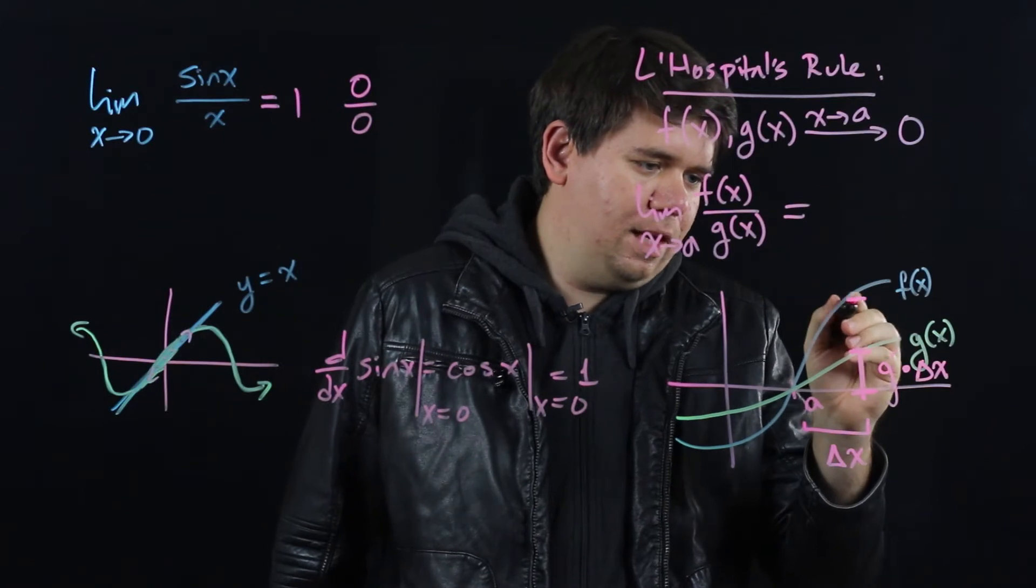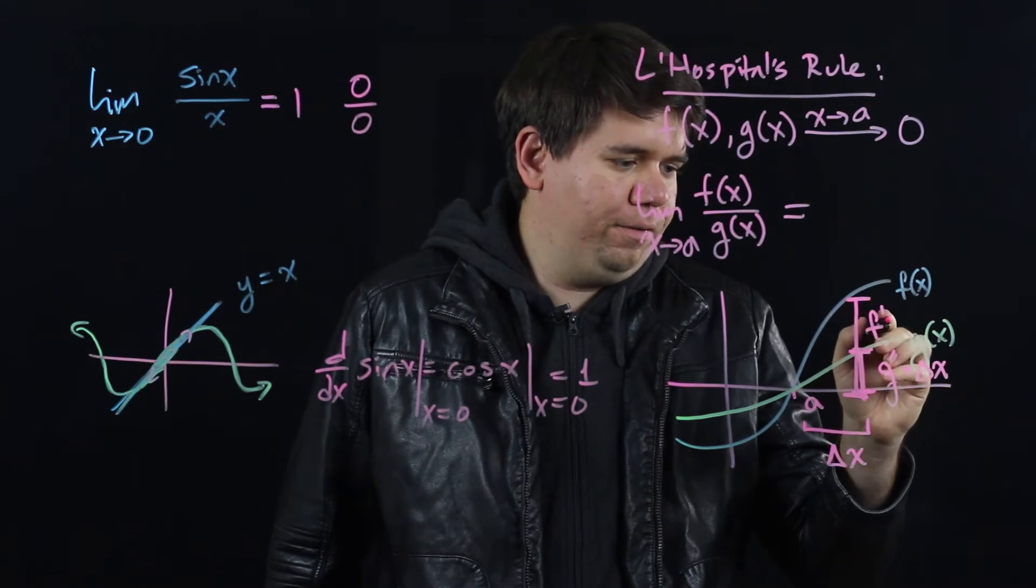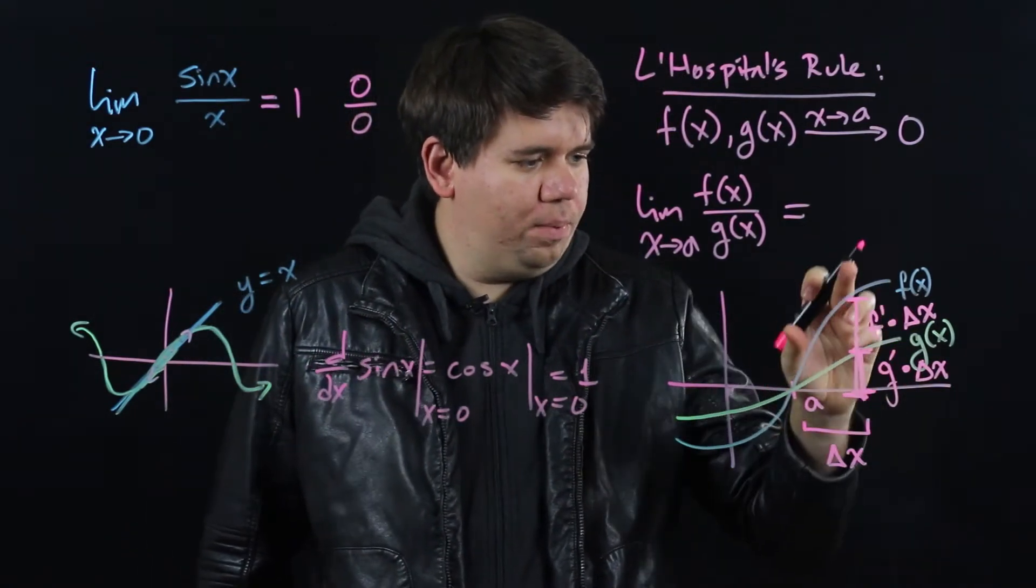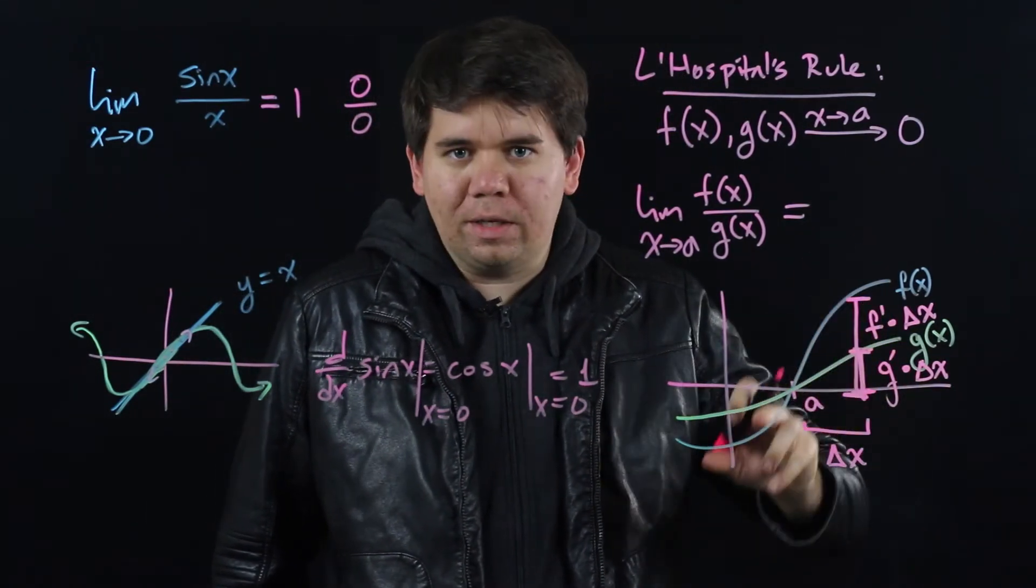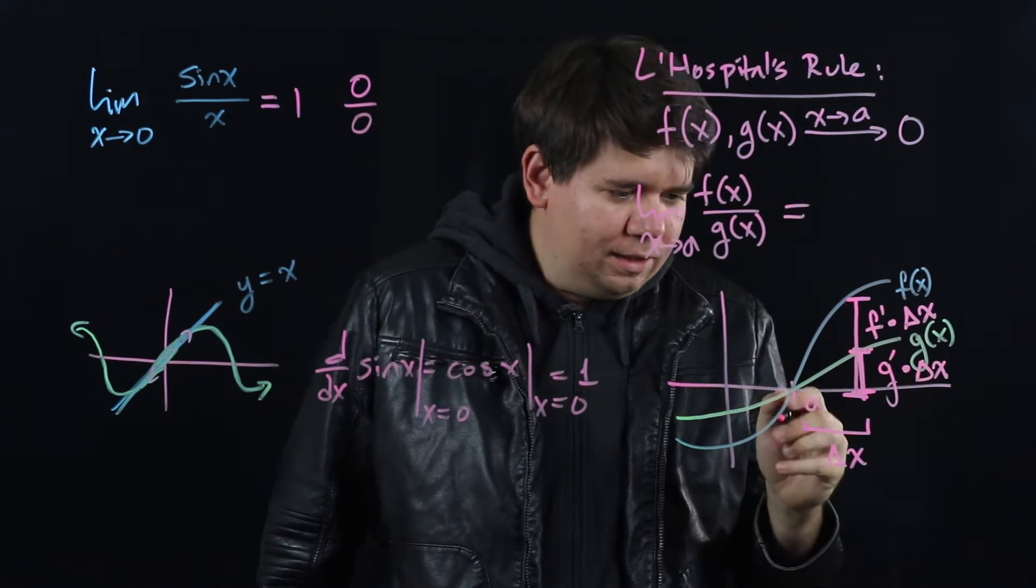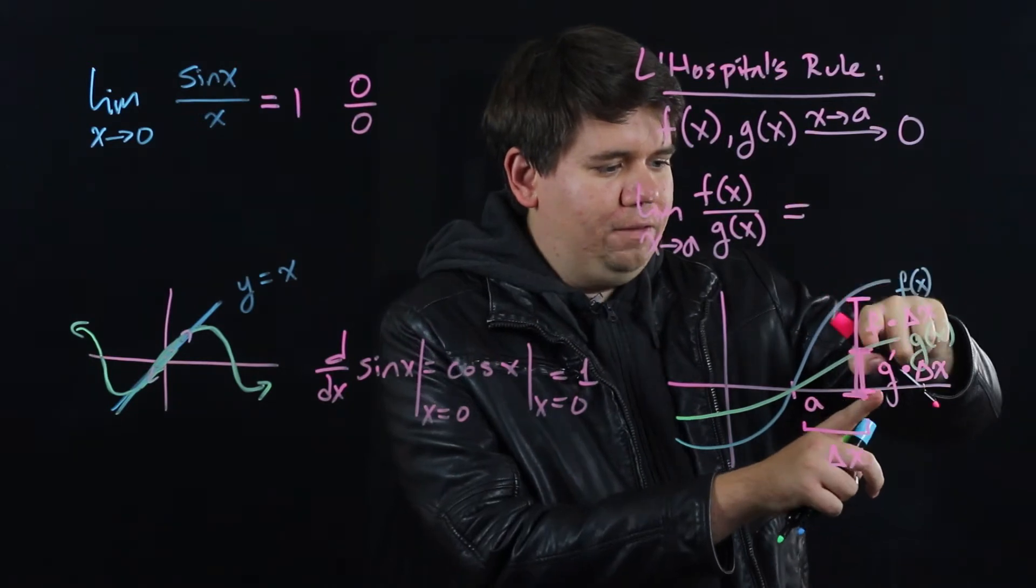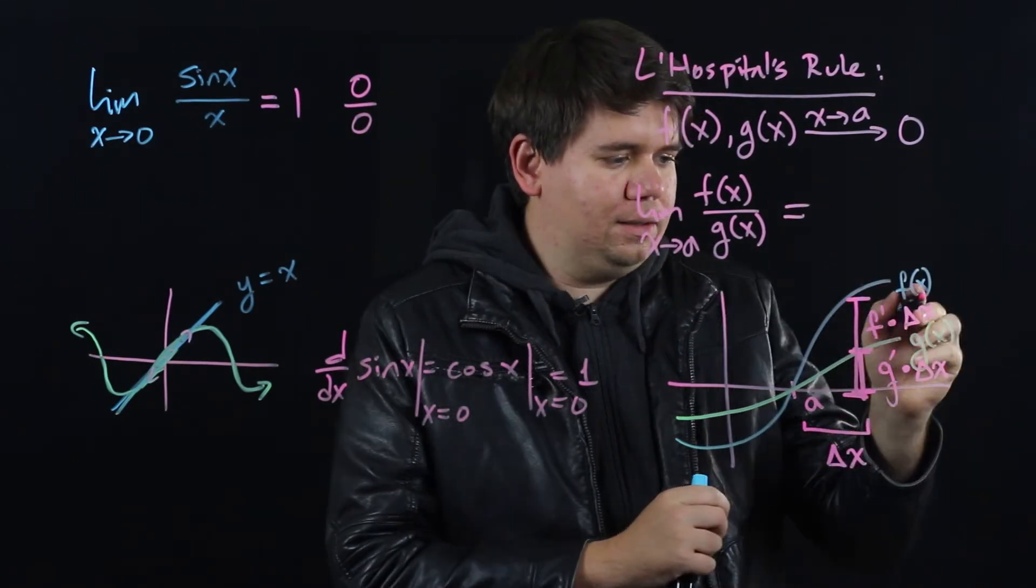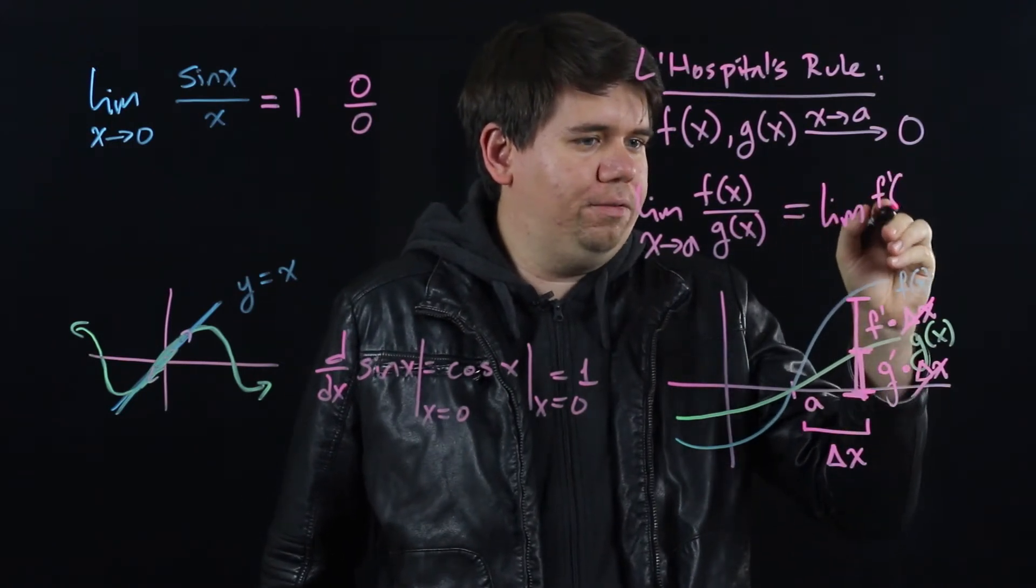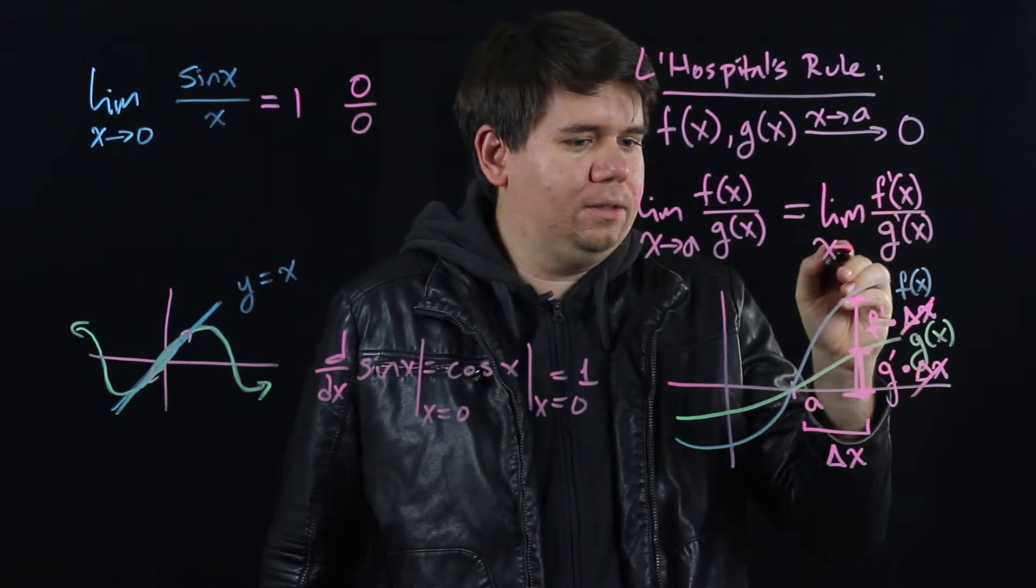And exactly by the same argument, the height of this function f of x right here should be the derivative of f times delta x. That way your slope is the derivative of f, just like we expect it to be. But then we can see the limit of f divided by g—instead of trying 0 over 0, you can just take the limit of the derivative of f times delta x divided by the derivative of g times delta x. Those delta x's would cancel, and you get the limit is just the derivative of f divided by the derivative of g as x goes to a.